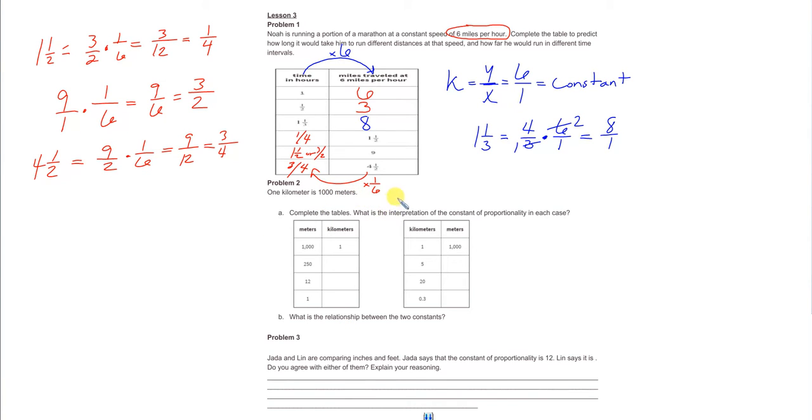We just got to complete the table. What is the interpretation of the constant of proportionality in each case? So number one, let's complete the table.